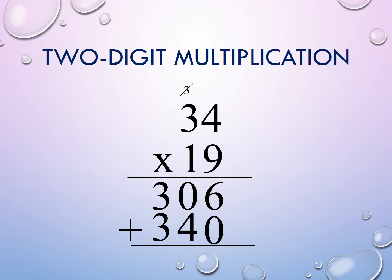Now we add both products together. 6 plus 0 is 6. 0 plus 4 is 4. 3 plus 3 is 6. So your answer is 646. Yee-haw!